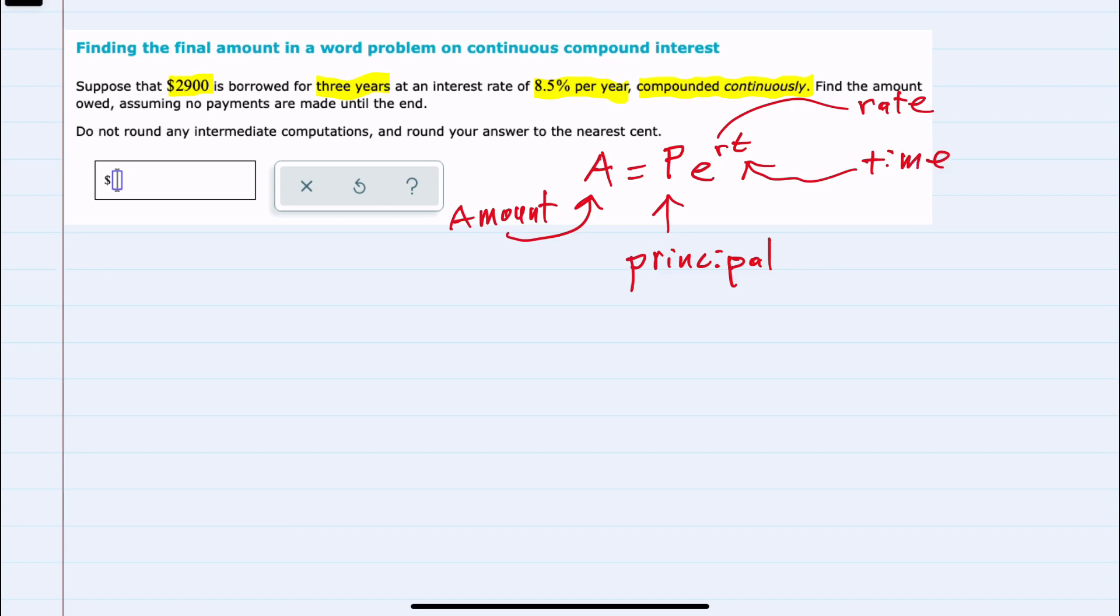So doing our substitution, A, the amount after three years, is what we're looking for. P is the $2,900 that we started off with.